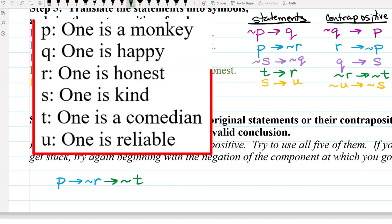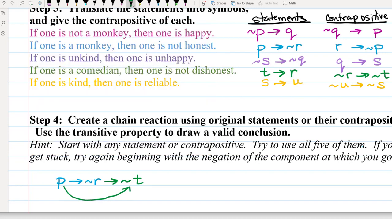I actually could draw a conclusion here and a valid one. Remember P is the statement one is a monkey. Negation of T is one is not a comedian. So I could come to the conclusion that if one is a monkey, then one is not a comedian. And that's a valid conclusion. But I haven't used all of the facts. I want to see what conclusion I could come to that uses every single one of these facts if possible.